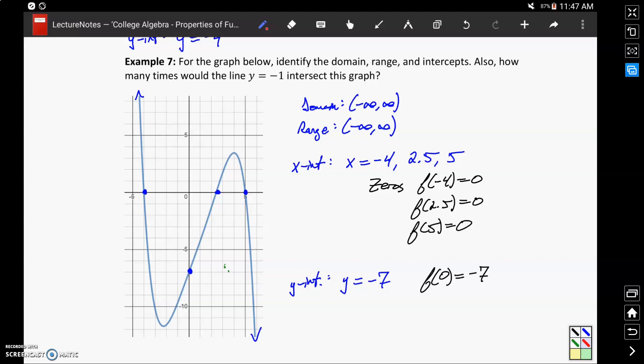The other part of this question, where we're asked how many times the line y equals negative 1 intersects this graph, can be answered by just drawing that graph of y equals negative 1 over top of our function. So y equals negative 1 would just be a horizontal line passing through negative 1, and we could see that we would have three points of intersection between that horizontal line and the graph that was already provided.